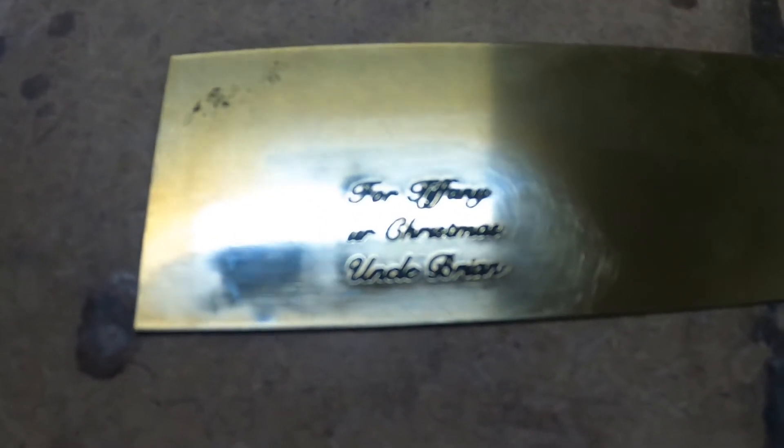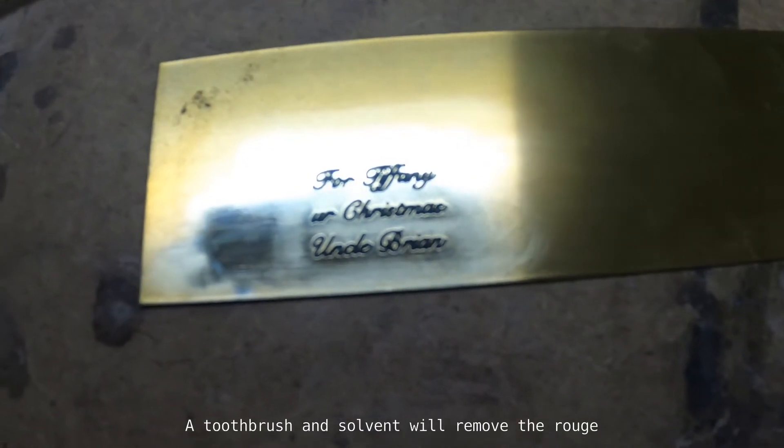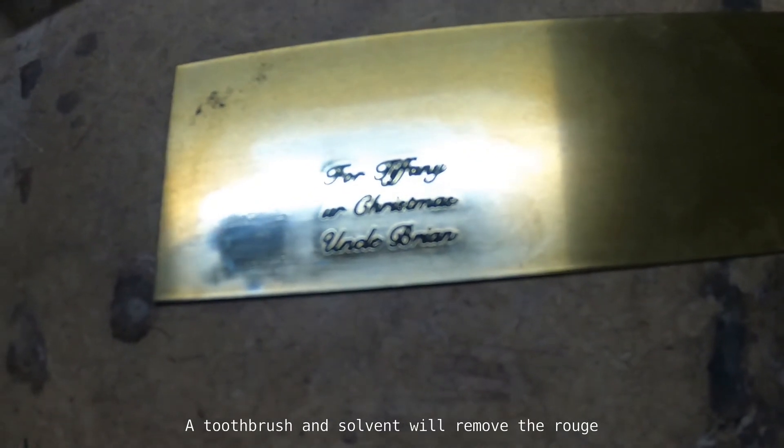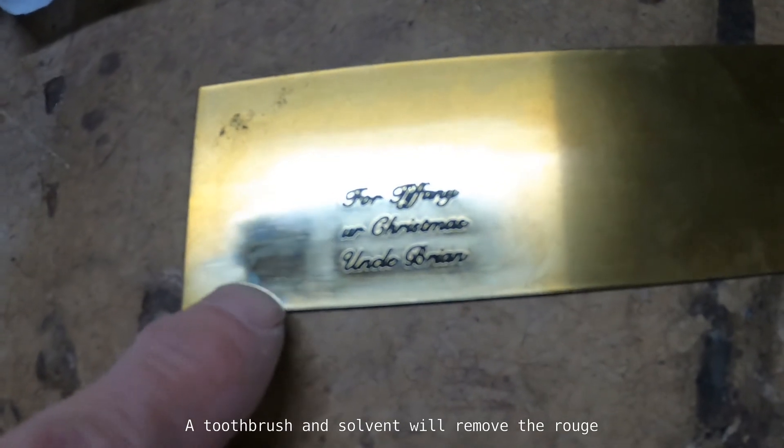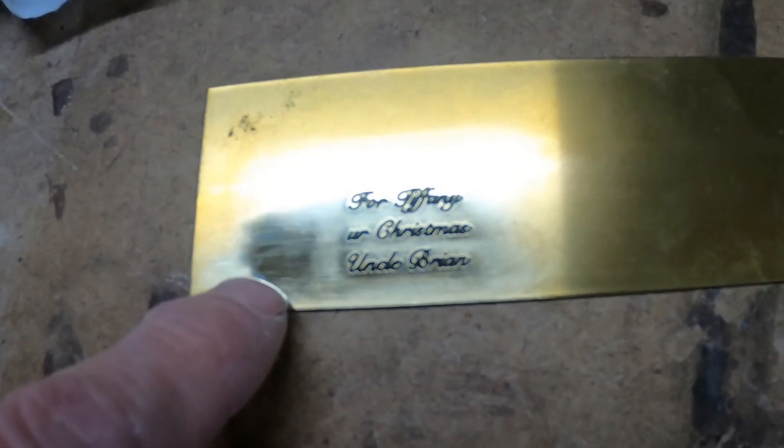And here's the end of the test after some polishing with the Dremel and the polisher and the rouge. We still got a little rouge down there, which makes it actually a little bit easier to read. And if you want to spend even more time, you can get it to go crazy shiny like this spot right here where we just sat with the Dremel.